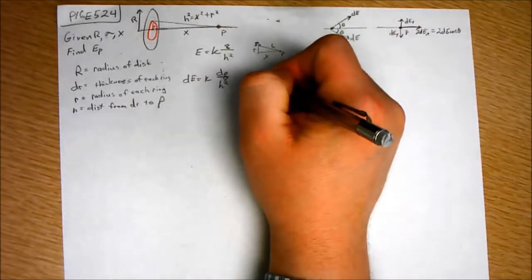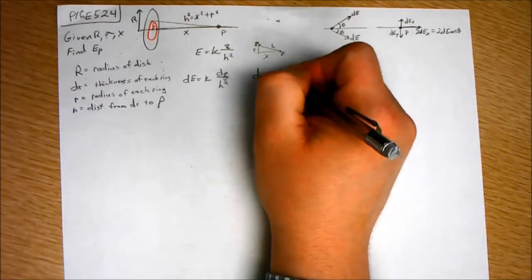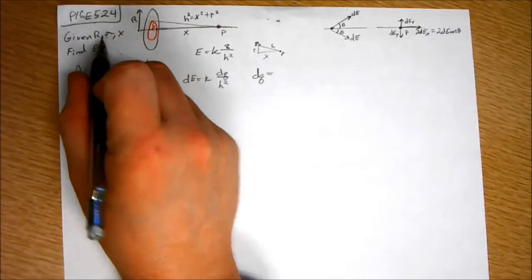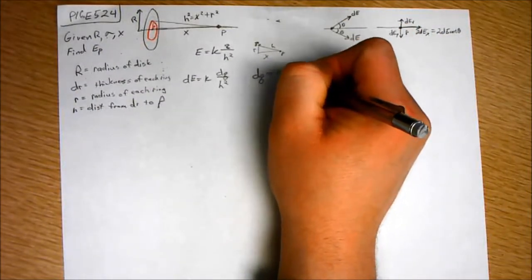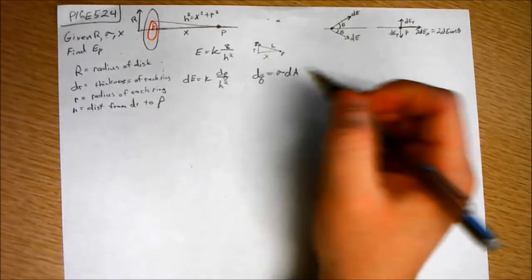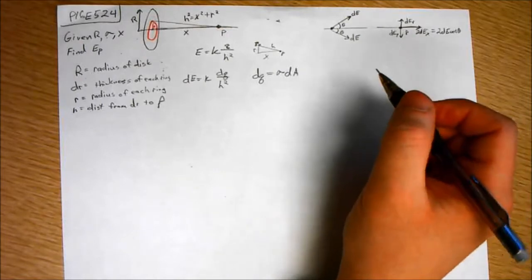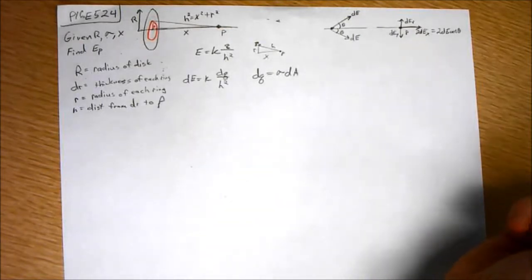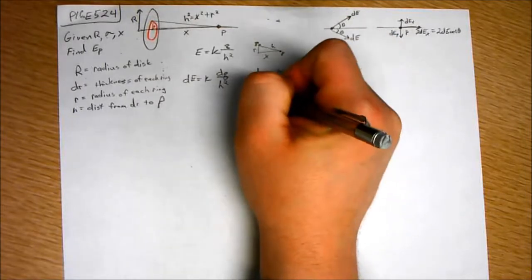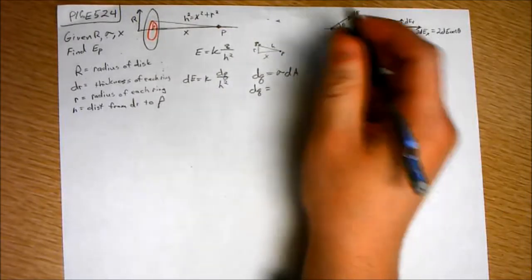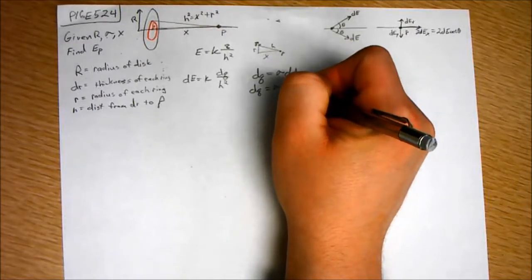So, what is DQ? We don't know what DQ is, but we know what the surface charge density is. So, we can say DQ equals surface charge density times DA. In other words, the coulombs per meter squared, if you take that and multiply it times the area meter squared, you get the coulomb charge. What is DA? We have to expand that because we don't have that.